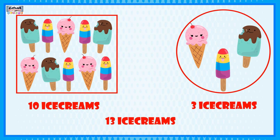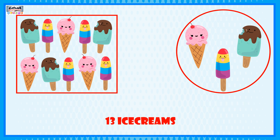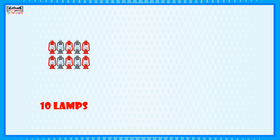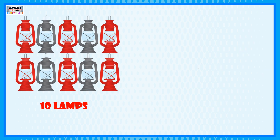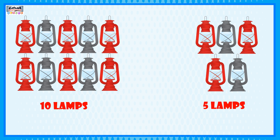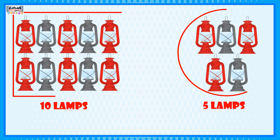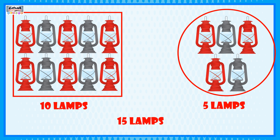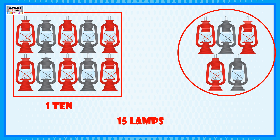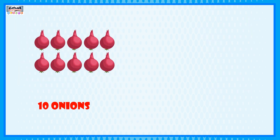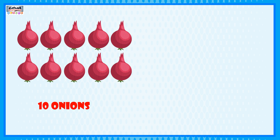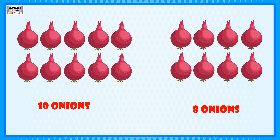10 ice creams plus 3 ice creams will make 13 ice creams. So we have 1 ten and 3 ones. 10 lamps plus 5 lamps is equal to 15 lamps. So we have 1 ten and 5 ones.